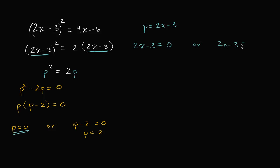Or 2x minus 3 is going to be equal to this p value, is going to be equal to 2. And so this is pretty straightforward to solve. Add 3 to both sides. You get 2x is equal to 3. Divide both sides by 2. And we get x is equal to 3 halves.